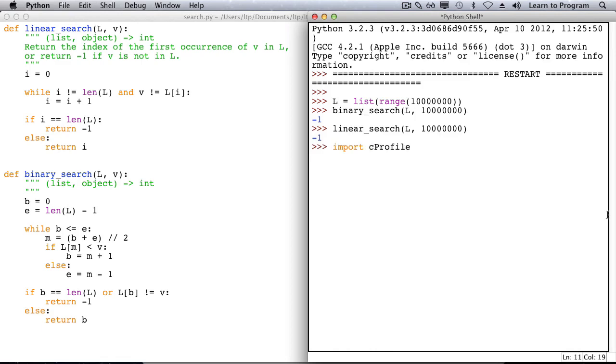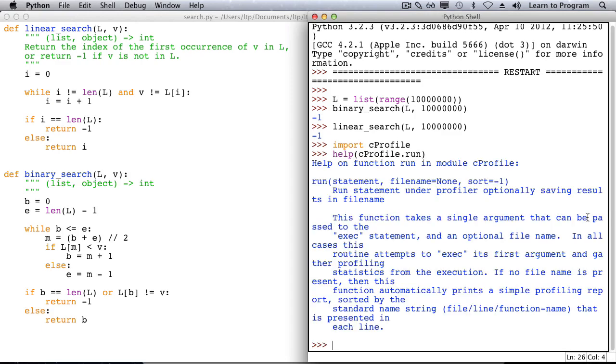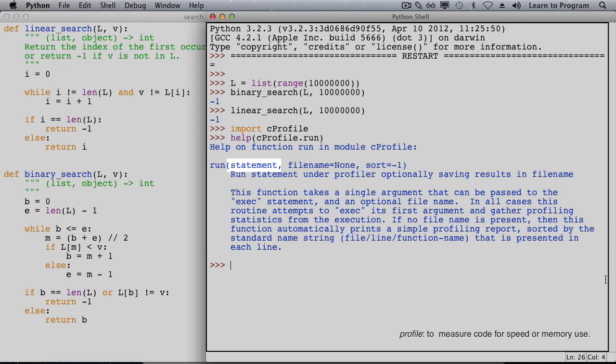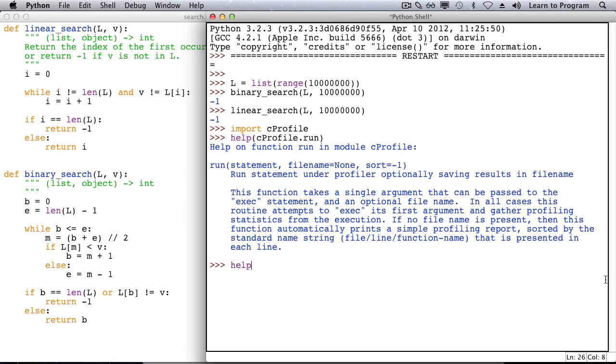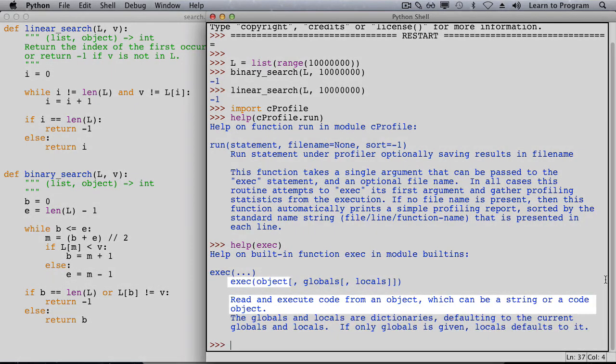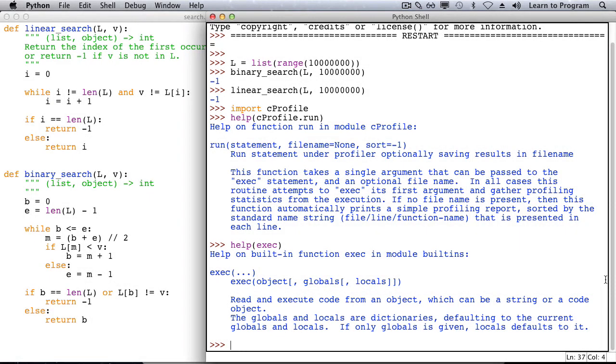C-profile is a module that contains code that allows us to profile other code. To profile means to measure in some way, see how much memory it uses, how much time it takes to run. Function run in module C profile takes a statement to execute and then presents profiling information. It uses something called exec, which takes an object, which can be a string or a code object, and then executes it. A code object is something we haven't encountered yet, nor do we need it, because we can just use a string. Let's try calling exec.